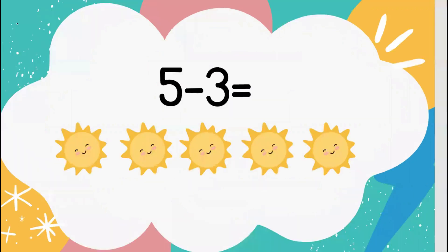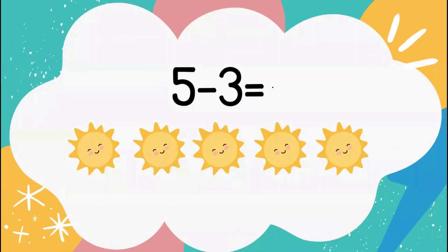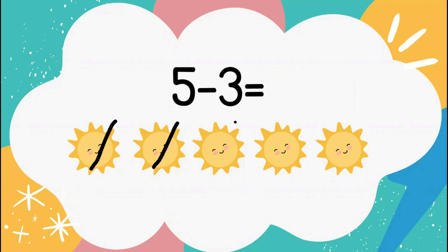Our first problem is 5 minus 3 equals. Down below you'll see I have 5 suns, and we need to take away 3. Count with Miss K to take away 3 suns: 1, 2, 3. Good job. I had 5 suns and I took away 3. How many am I left with? Count with Miss K: 1, 2. So 5 minus 3 gives us 2.